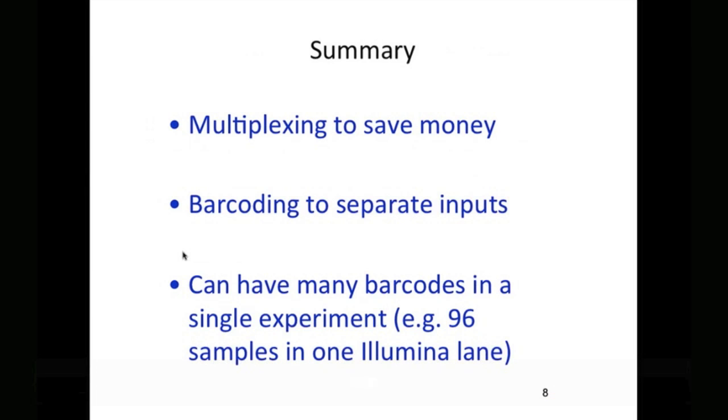So just to summarize, multiplexing is a way to save money by sequencing multiple samples in the same Illumina flow cell lane. We do this by using a short nucleotide barcode within the primers, and we can have many barcodes in a single experiment. In fact, you can take an entire 96-well plate, everything with a different barcode, sequence all those samples together, and then separate them during analysis.